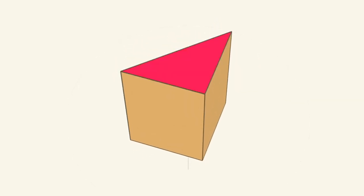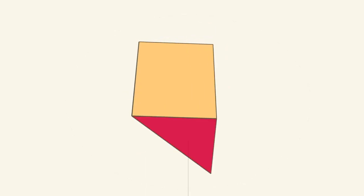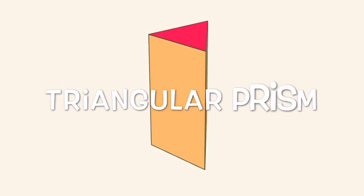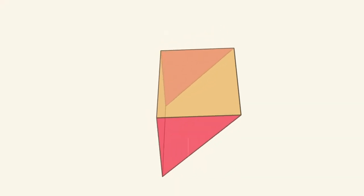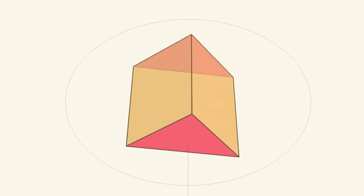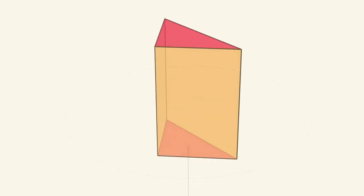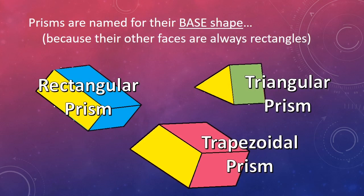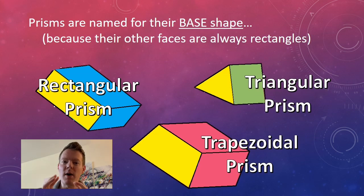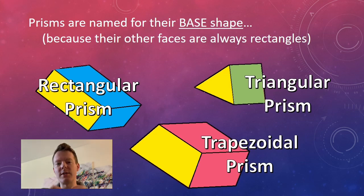The last one has a triangle on the top and bottom — they don't have to be on the top and bottom, they can be on the sides — but the other faces are rectangles and are parallel to each other, making this a triangular prism. So that's the gist of what makes a prism a prism: two special polygon figures connected in three-dimensional space with rectangle faces.